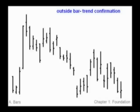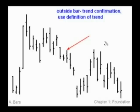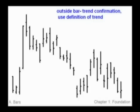Outside bar trend confirmation. We can simply use the definition of trend to confirm trend direction following an outside bar. Let's take a look at some examples. This is an outside bar — what do we see following it? We see a bar with a lower high and a lower low, therefore downtrend. This outside bar here — what do we see following it? We see a bar that has a higher low and a higher high, so uptrend is the move here. Note that we did not mention the opening price and closing price when doing bar-to-bar trend analysis because they don't play a role in the definition.